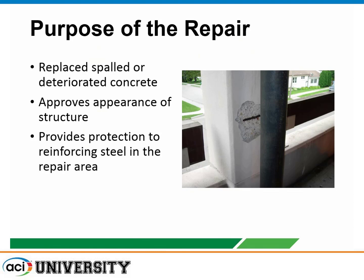What's the purpose of this repair procedure? Vertical and overhead spall repair is probably one of the most common procedures you'll see. The purpose is to replace spalled or deteriorated concrete, improve the appearance of the structure, remove any loose concrete that could create safety issues, and provide protection to the reinforcing steel within the repair area — reinstating the structure and providing protection at the same time.